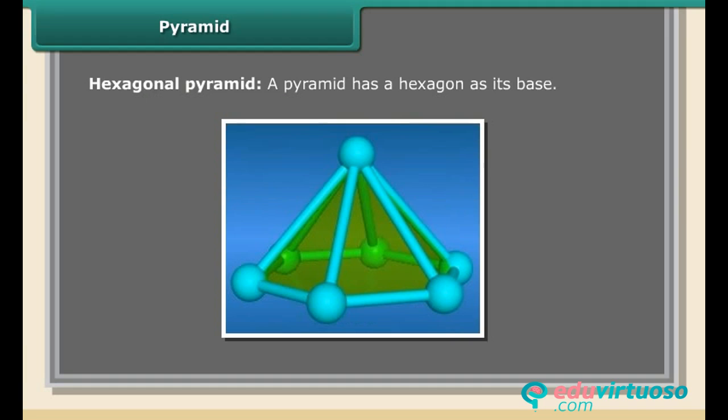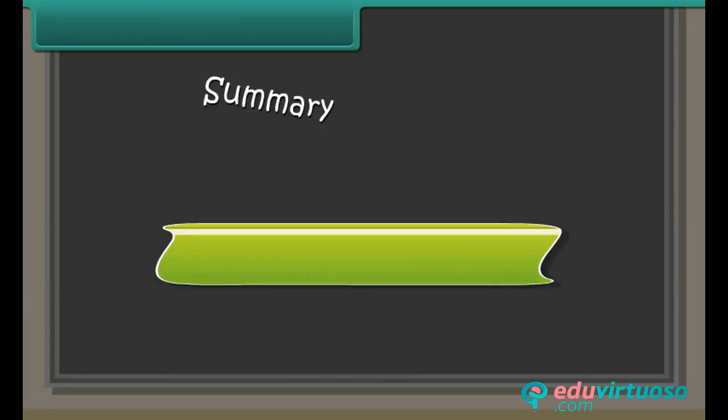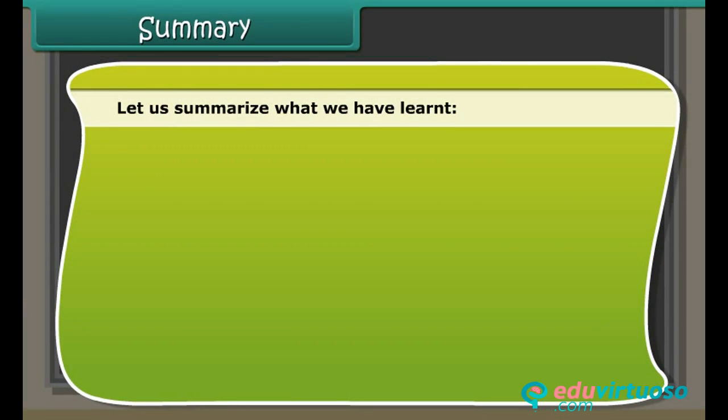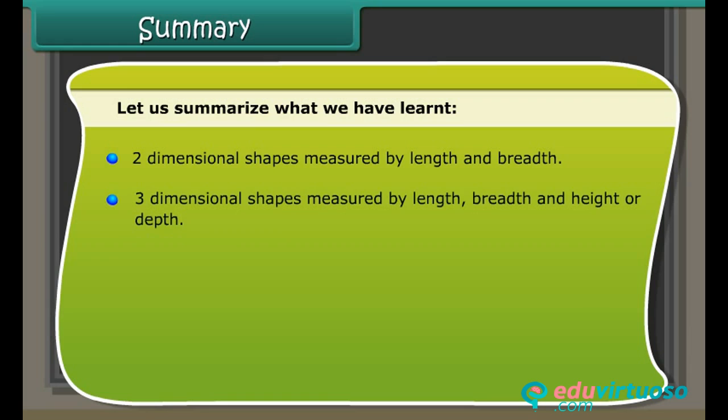Summary: Let us summarize what we have learned. Two-dimensional shapes are measured by length and breadth. Three-dimensional shapes are measured by length, breadth, and height or depth. 3D objects have different views from different positions.